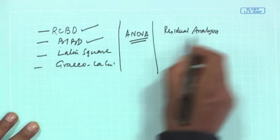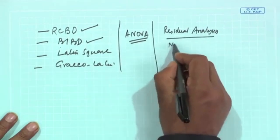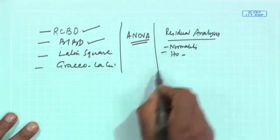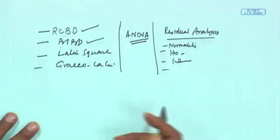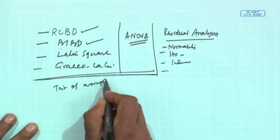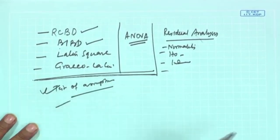If formulations are found to be different, you should also conduct post-hoc tests such as Fischer's LSD or Tukey's test to identify which pairs differ — as shown earlier. You must also perform residual analysis to verify ANOVA assumptions: normality of error terms, homoscedasticity, and independence of observations. These steps apply to all randomized complete block design variants. Good luck with the assignment and exam on block designs. Thank you very much.